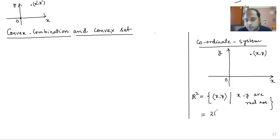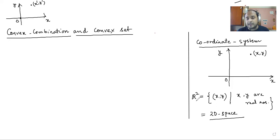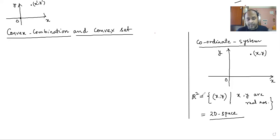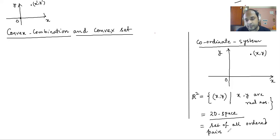R² is the two-dimensional space, the two-dimensional coordinate system. Similarly, for a three-dimensional coordinate system, we consider R³. In general, for an n-dimensional coordinate system, it is denoted by Rⁿ. R² is the set of all ordered pairs of points in 2D. All the mathematics done in MBA is defined on R², so you must be very familiar with R². That is the prerequisite required for knowing convex combination and convex set.